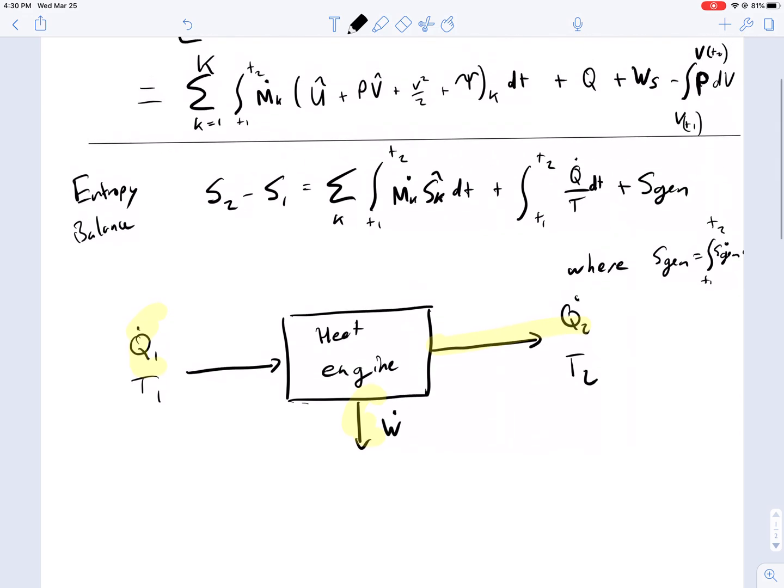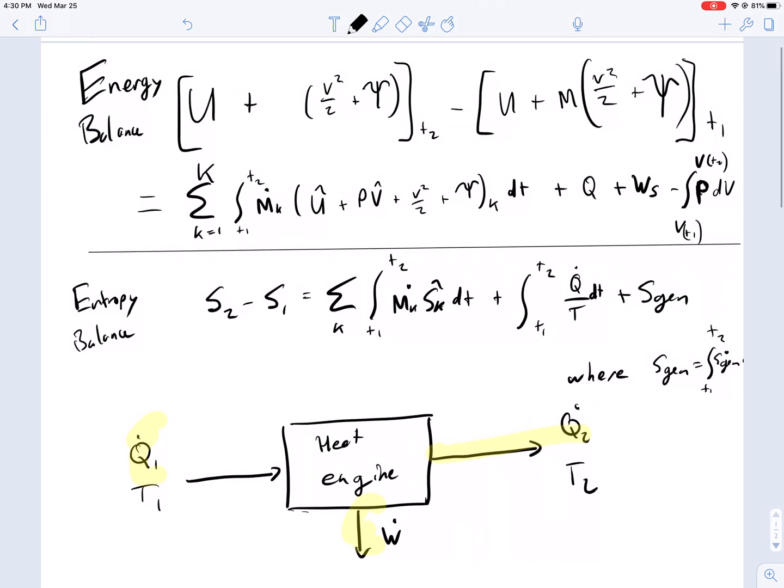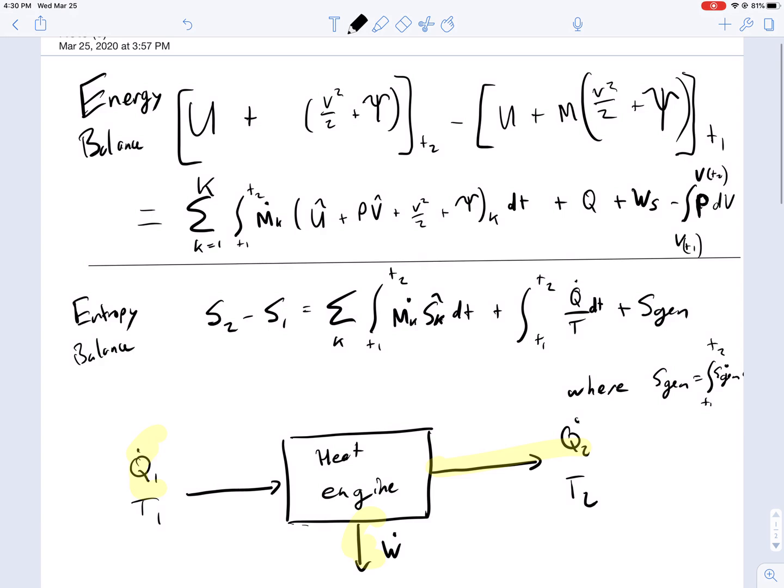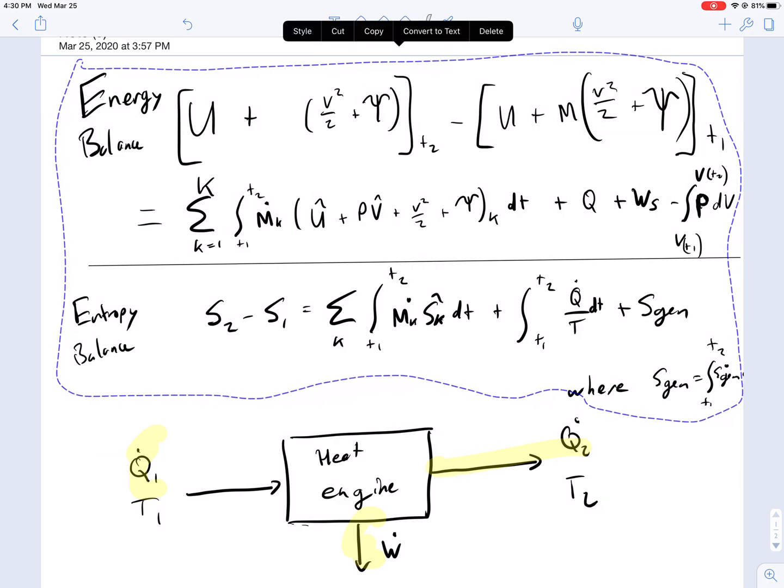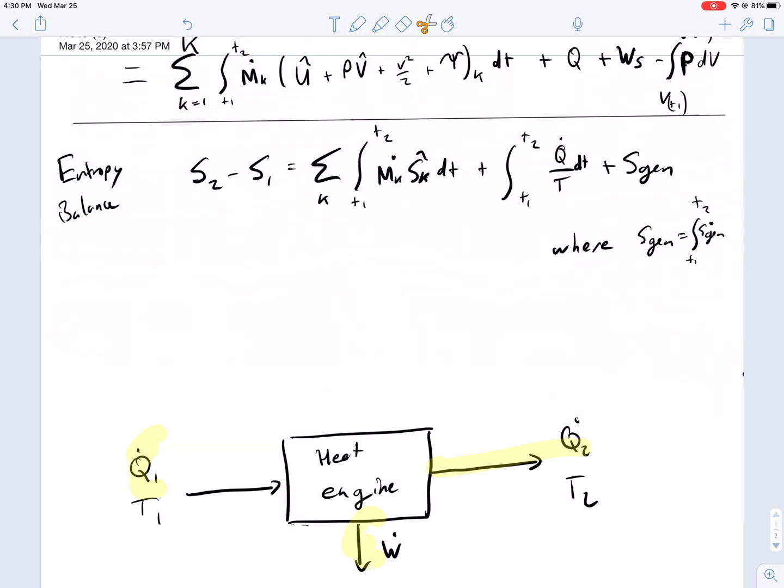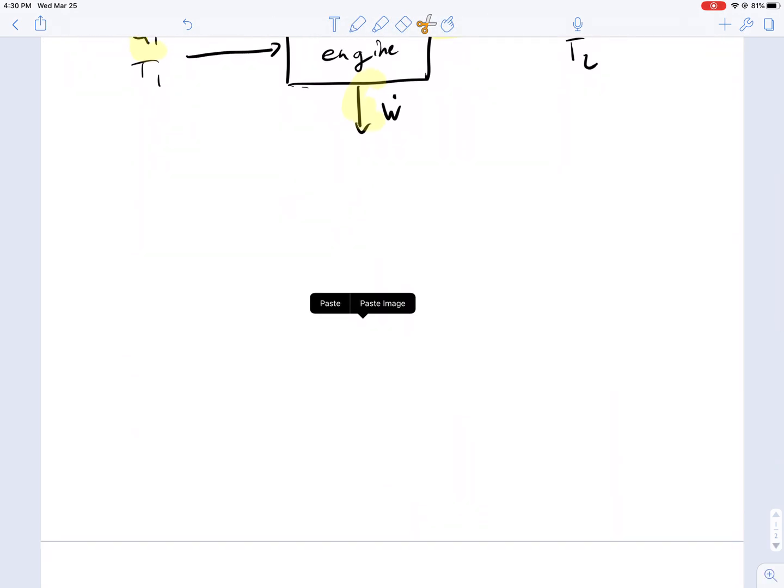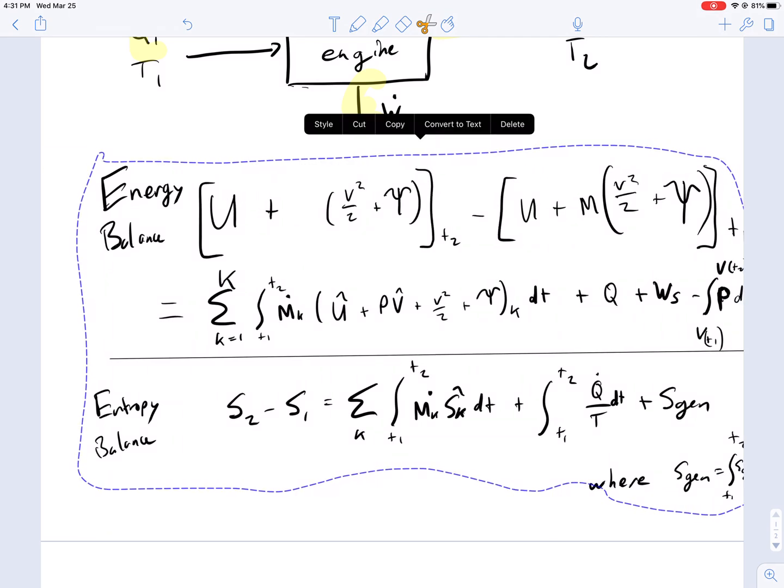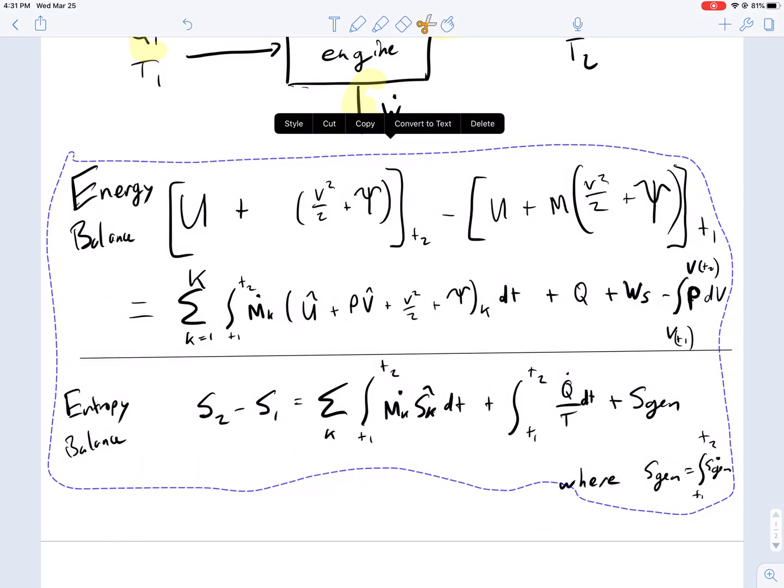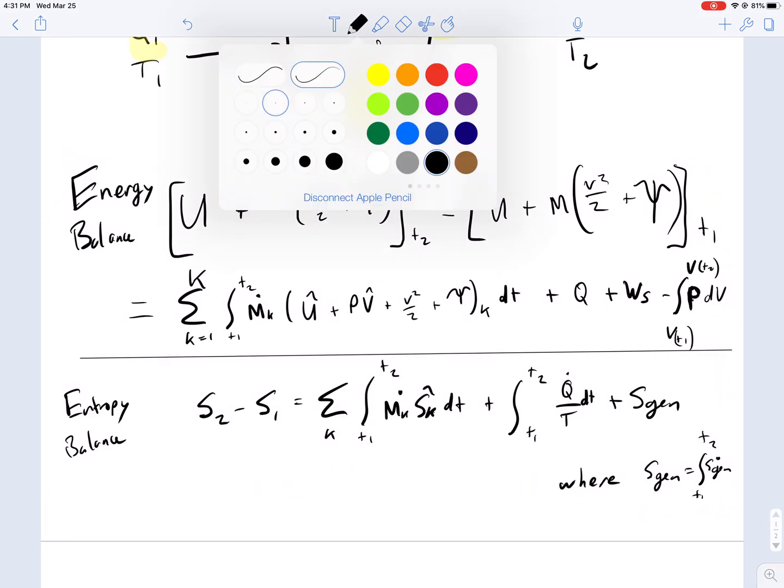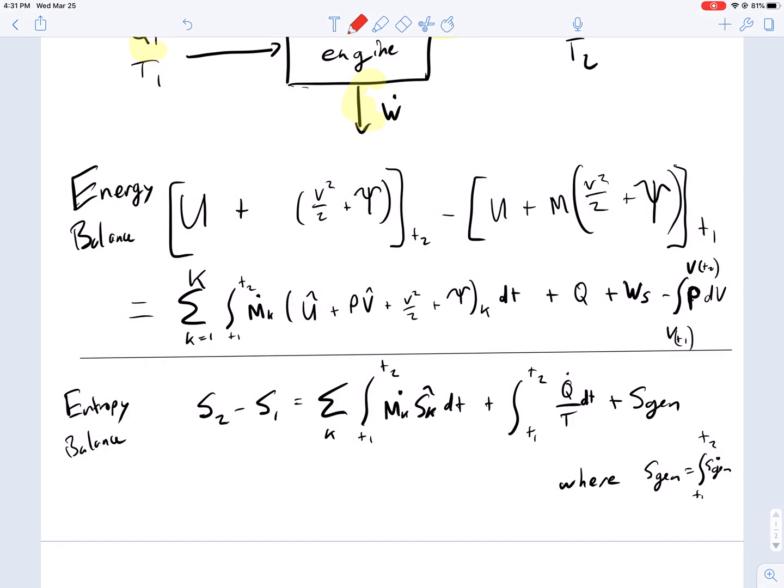Starting from our two balance equations here for the integrated form, we can consider a simple situation where we can calculate the maximum efficiency. And this could become a design goal, also a sanity check for doing thermodynamic calculations. Starting with these equations, following our diagram of the engine, let's use them to simplify this down and then solve for the maximum efficiency of this engine scheme.